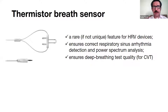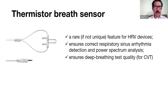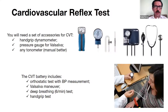Breathing, like heart rate, is controlled by the autonomic nervous system, and there is a very strong correlation between respiratory activity and heart rate. To ensure correct analysis, we need to know the actual breathing rate of a person and measure it directly rather than deriving it from secondary sources. With a thermostat sensor, we can record breathing frequency, get a curve of breathing in and out, compare it with rhythm changes, and get additional information about the connections between different branches of the autonomic nervous system.